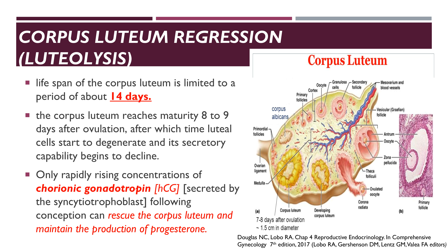The lifespan of the corpus luteum is limited to about 14 days. The corpus luteum reaches maturity 8 to 9 days after ovulation, after which luteal cells start to degenerate — what we call luteolysis — and its secretory capability begins to decline. Structural luteolysis is a complex process involving characteristic degenerative changes with intense cytoplasmic vacuolization and invasion by macrophages. Only rapidly rising concentrations of human chorionic gonadotropin, or HCG, secreted by the syncytiotrophoblast if the patient becomes pregnant, can rescue the corpus luteum and maintain the production of progesterone.